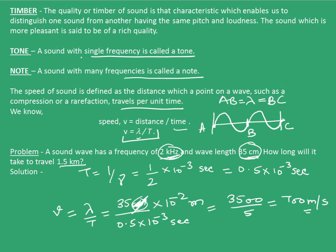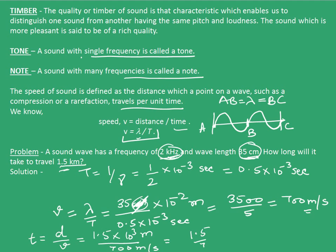To calculate the time it takes to travel 1.5 kilometers, time taken = distance/speed = 1.5 × 10³ meters divided by 700 meters per second. This comes out to be 1.5/7 × 10 seconds, which is 15/7 seconds, approximately 2.1 seconds.